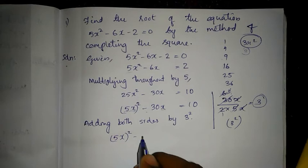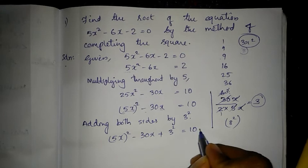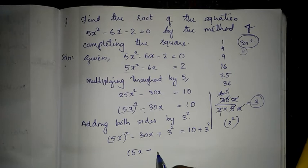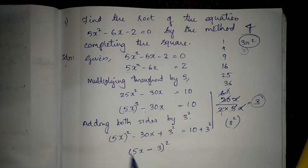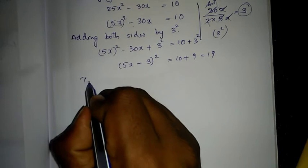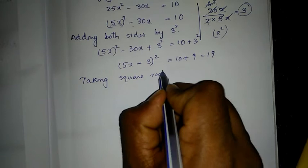The left side fits the pattern a² minus 2ab plus b² with a = 5x and b = 3, so we write it as (5x minus 3)². On the right side, 10 + 3² = 10 + 9 = 19. So (5x minus 3)² = 19. Now taking square roots on both sides: the square root removes the square, leaving 5x minus 3.